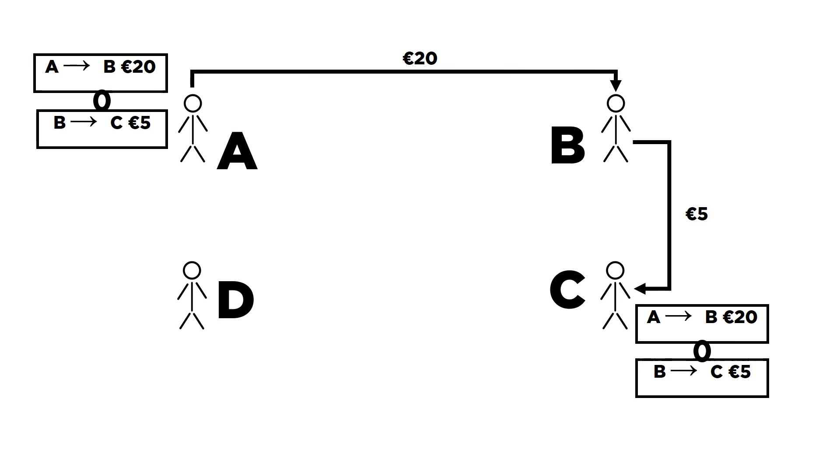Let's see how this distributed ledger gets synchronized. Suppose B wants to send 5 euros to D. To do that, B will publicly broadcast his intention to the entire network and everyone in the network will immediately see that B wants to send 5 euros to D. But this transaction is not valid yet.